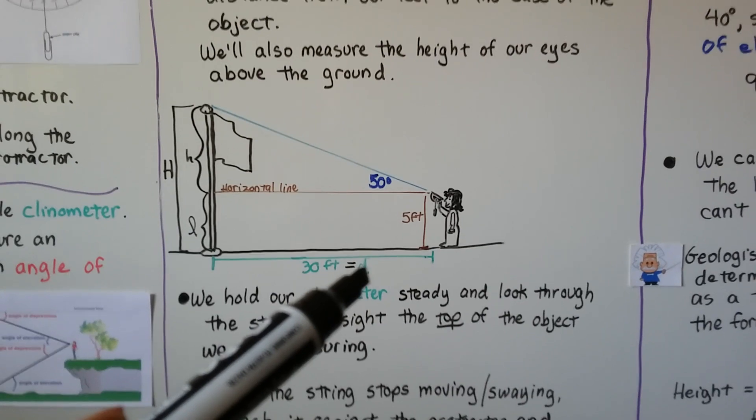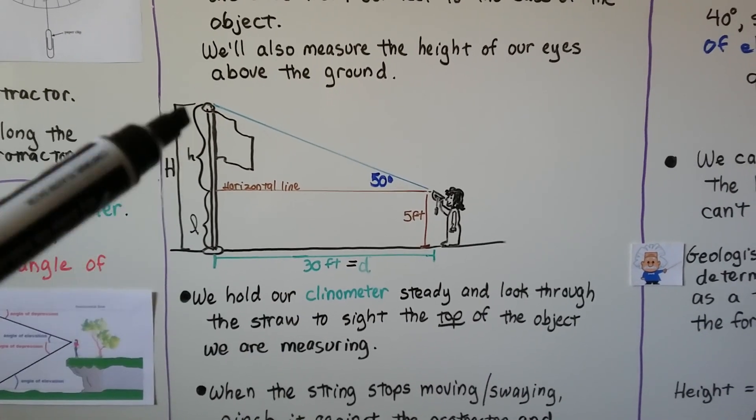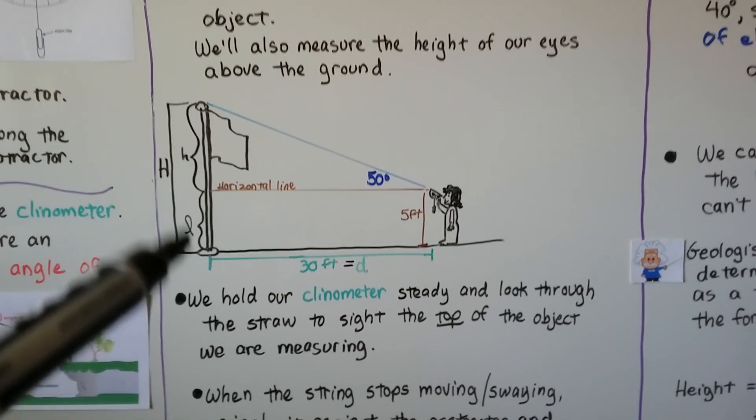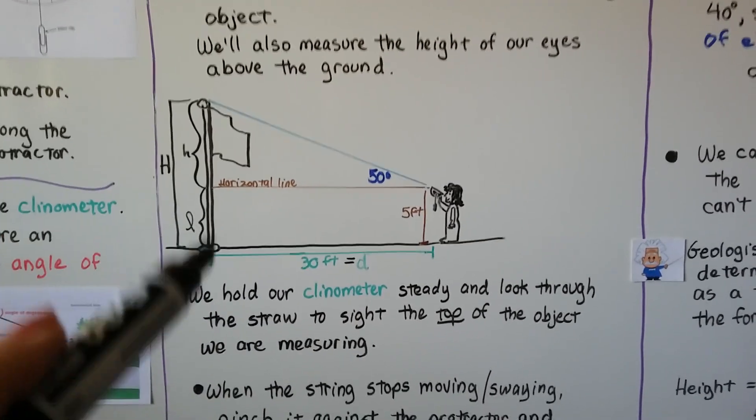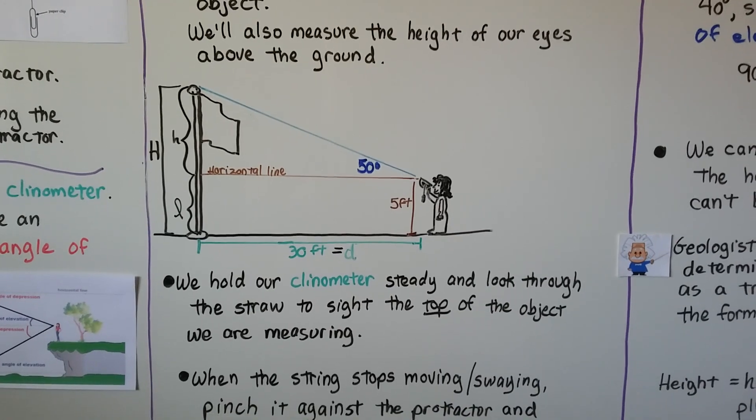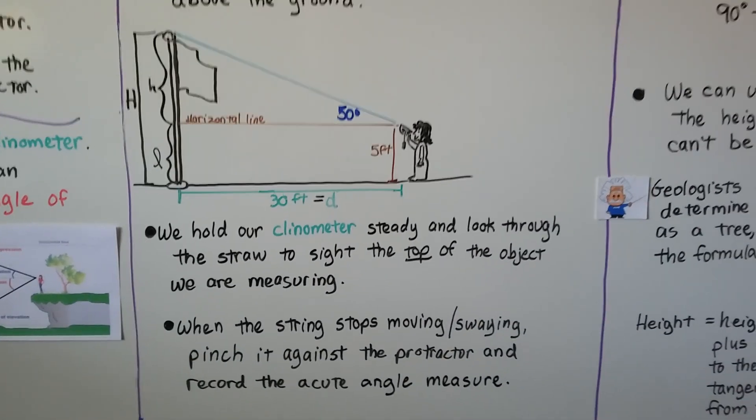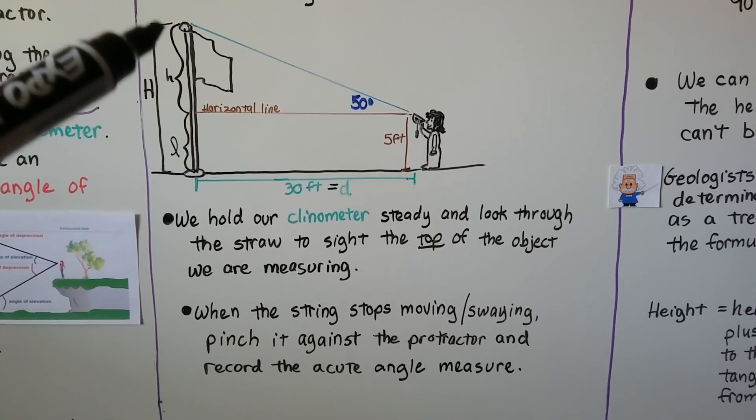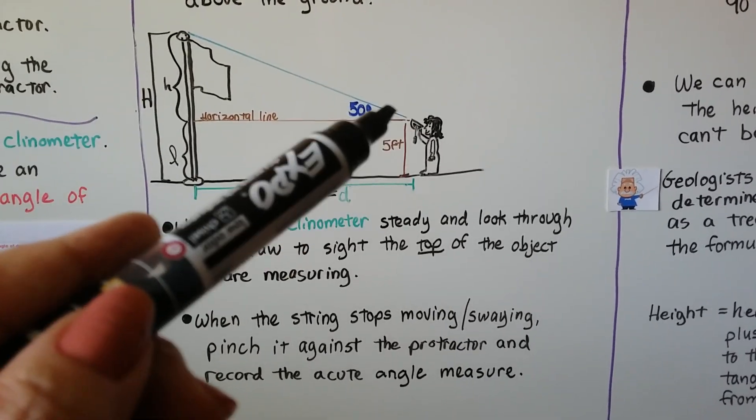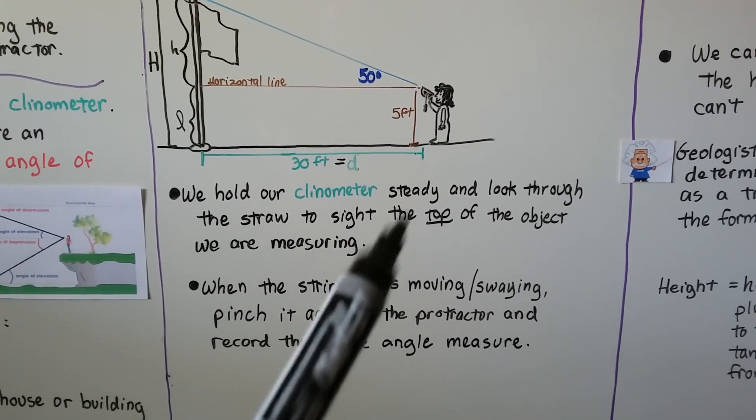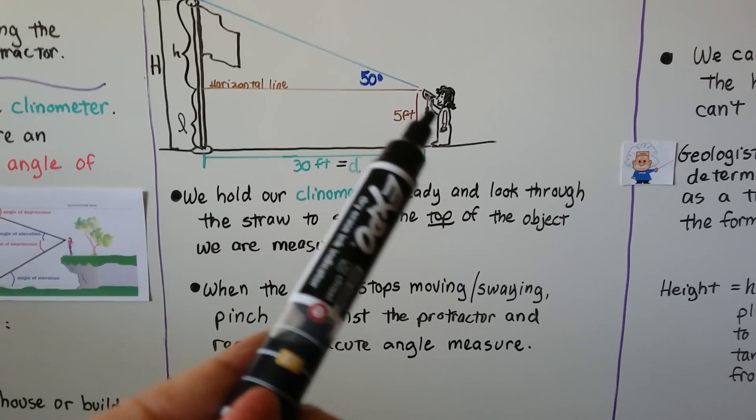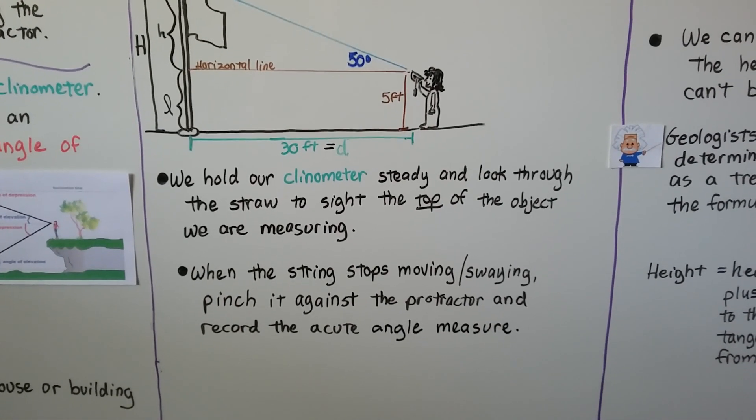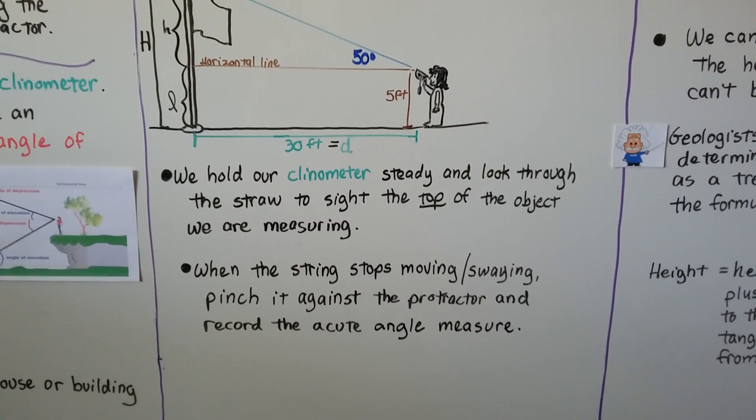Now in some videos you might see this called L or A or something else and you know that might be called a D. As long as you know what they stand for, it doesn't matter what the letters in the formula are that you're using. We hold our clinometer steady and look through the straw to sight the top of the object. And the string is going to be swaying and moving and when it settles down, put your finger on the string and pinch it against the protractor and record the acute angle measure.